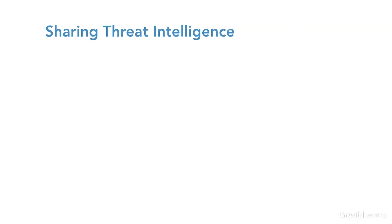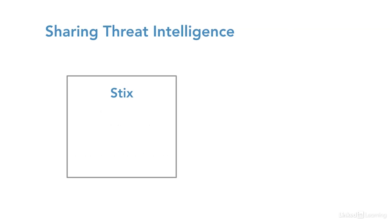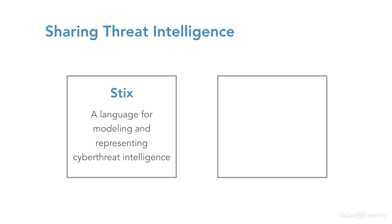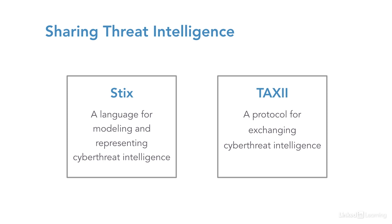STIX and TAXII are two interacting standards designed to support automated sharing of threat intelligence. STIX defines the threat intelligence while TAXII defines how that information is communicated. Associated with STIX and TAXII is the set of standardized cyber-observables which can be used to build IOC expressions. These include such things as domain names, email and IP addresses, file extensions and so on.